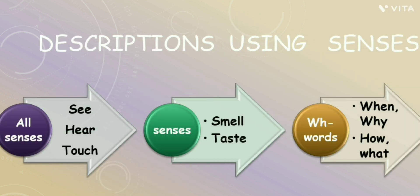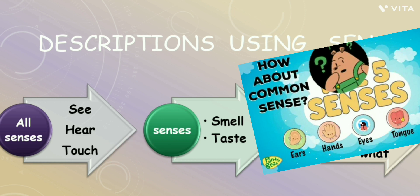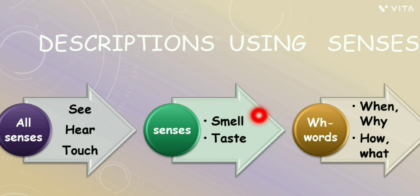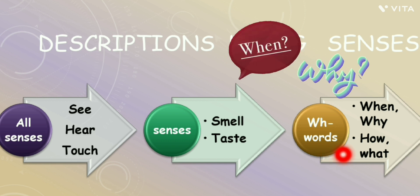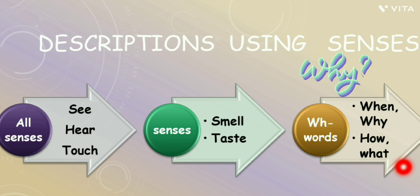Next is description using the five senses: sight, hearing, touch, smell, and taste. Describe what the characters saw, heard, touched, smelled, and tasted. This kind of description adds reality to the story. We can also add details by answering WH questions — when, why, how, and what happened next. This is a very useful tip.